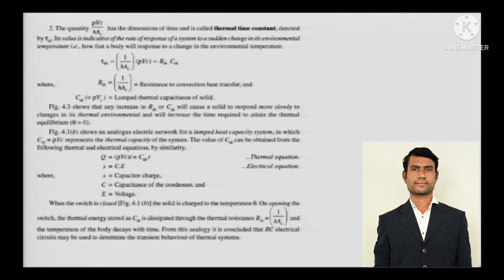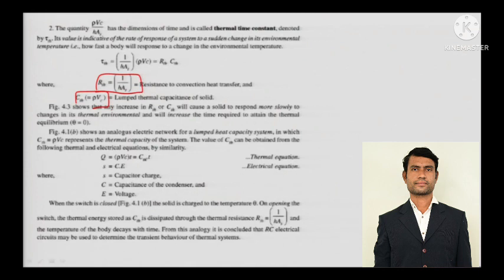The electrical circuit analogy (Figure 4.1b) shows an analogous electrical network for a lumped heat capacity system, in which the thermal capacitor C_th = ρVC represents the thermal capacitance. The value of C_th is obtained by analogy with electrical equations, where capacitor charge equals capacitance times voltage (EMF).